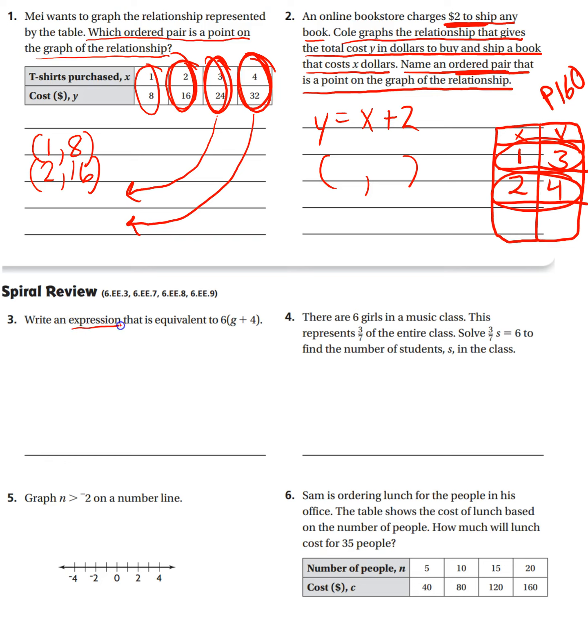Number three, write an expression that is equivalent to six times G plus four. Well, to do that, I'm going to use the distributive property. I'm going to distribute this six to both of these numbers. So six times G would just be six G. And then I still have the plus. I haven't done anything to the plus. But then six times four is 24. So that would be equal to this expression. I just used the distributive property to distribute. That means six times both things that are inside. So I did six times G, which is 6G. And then six times four, which is 24.